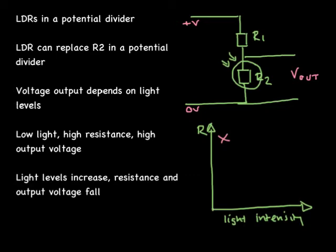So in the example where we want to switch on some security lights, when the light levels are low the resistance of the LDR is obviously high. And that means there's a high output voltage, and this high output voltage can be used to switch on the circuit for the security lights.